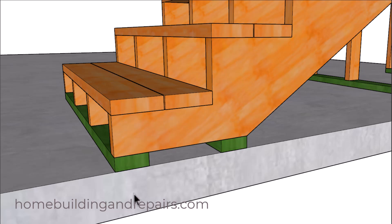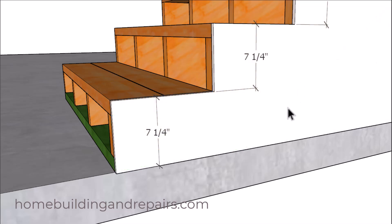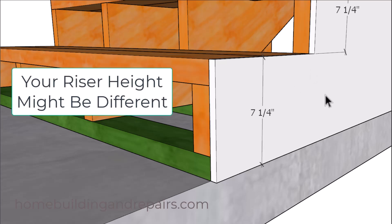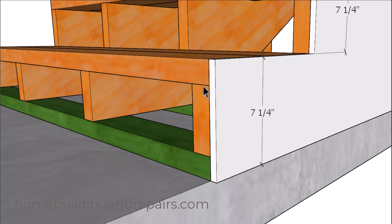Let's go ahead and add this piece right here along with the riser height number of seven and a quarter inches. This piece will represent the overall height of the riser. You can see here where the stair stringer is not going to be seven and a quarter — we're going to have to subtract the width of the tread and the width of the lumber supporting the stringers.